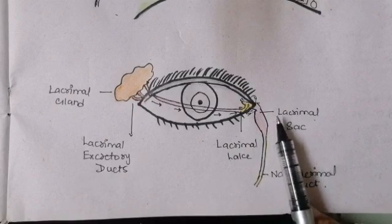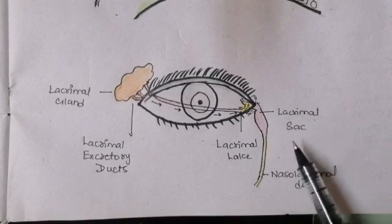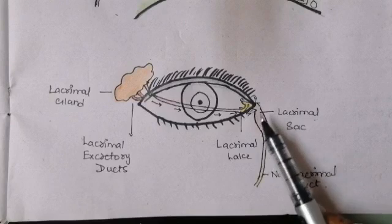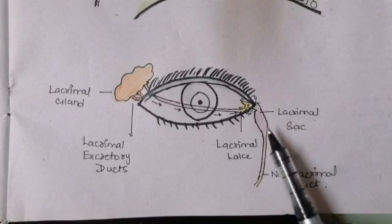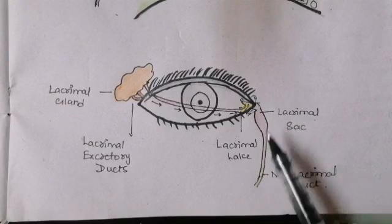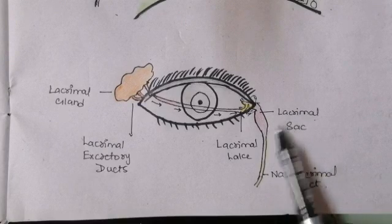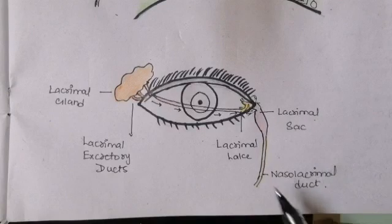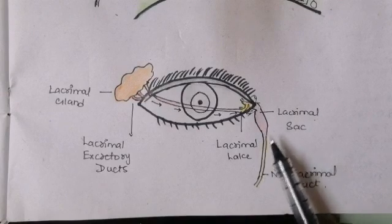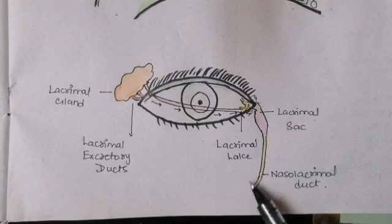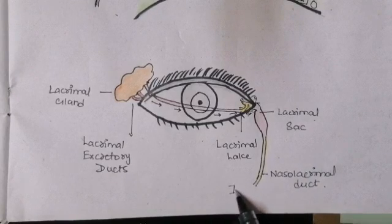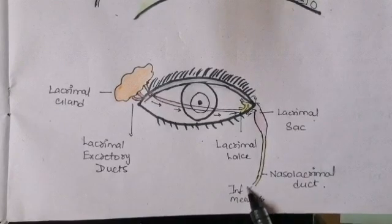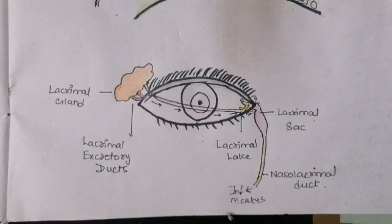The lacrimal sac is the upper dilatation of the nasolacrimal duct. The fluid accumulated in the lacrimal sac ultimately drains into the nasolacrimal duct, which then drains into the inferior meatus of the nose, also called the inferior concha.